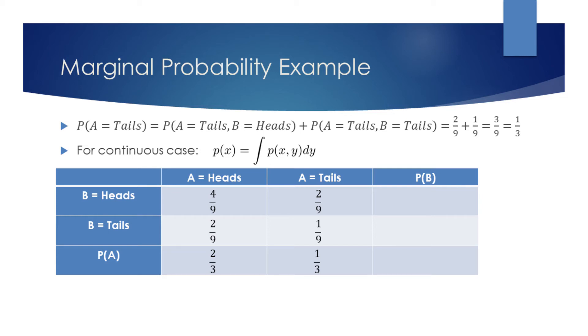Adding these two values, we find that the probability for the coin A to display tails is 1 3rd.